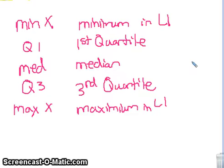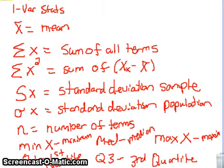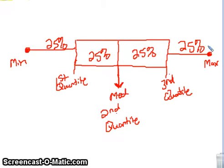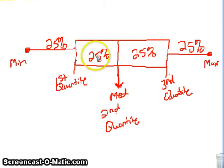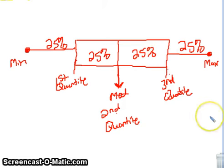This is useful if you want to find a box-and-whisker representation of your data. A box-and-whisker plot uses quartiles to split data into four sections — like four quarters in a dollar. The first 25% goes from your minimum to Q1, the second from Q1 to the median, the third from the median to Q3, and the fourth from Q3 to the maximum.